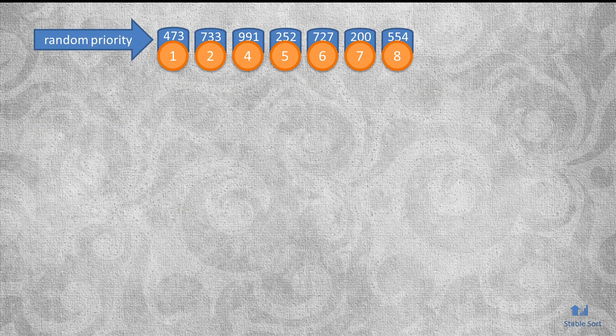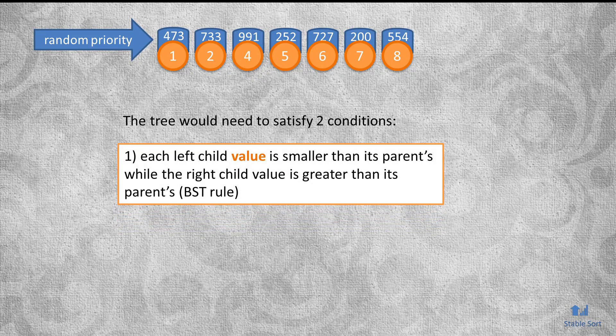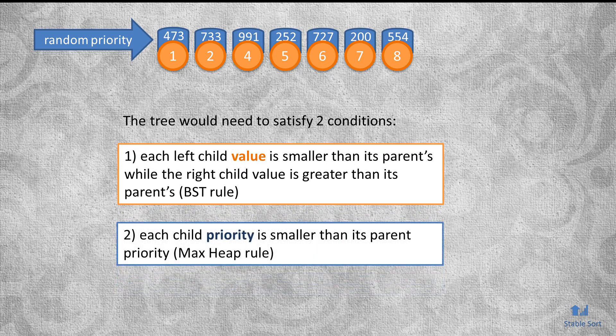Treaps solve this problem by assigning a randomly generated number to each of the nodes, called a priority. Then the tree is constructed as if it's a heap, with the maximum priority value being at the root of the tree. The tree construction needs to satisfy two conditions simultaneously: number one, each left child value is smaller than its parent while each right child value is greater than its parent — this is the binary search tree rule. And number two, each child priority is smaller than its parent priority — this is the max heap rule.